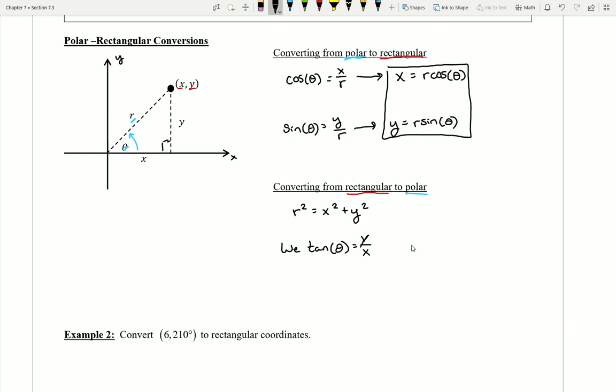Now, one thing that I have to be careful of is that I can't just take inverse tangent of both sides to find my theta because theta may be an angle that the inverse tangent is unable to find. Inverse tangent can only find certain angles. And so I do have to be a little bit careful here. While I know that this is true,